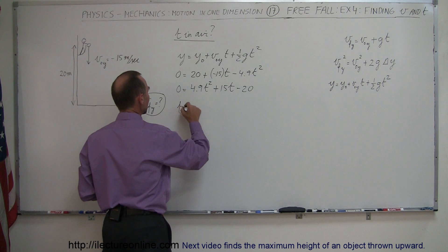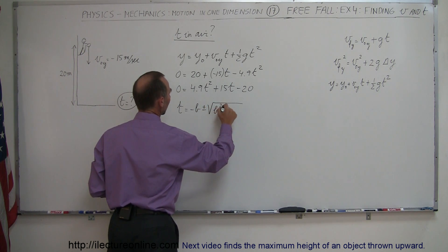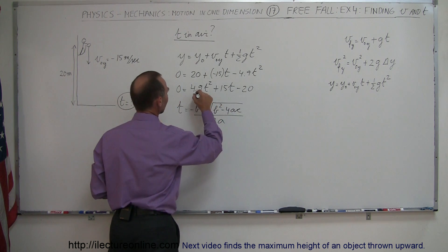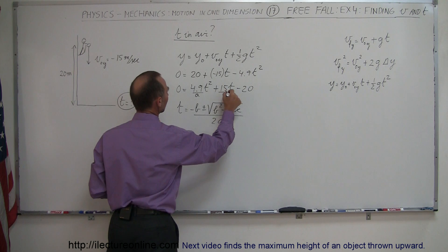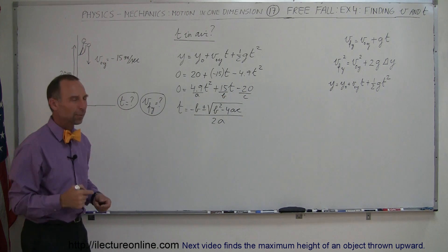You can say that t is equal to minus b plus or minus the square root of b squared minus 4ac, all divided by 2a, realizing that this coefficient is a, this coefficient is b, this coefficient is c. So let's plug in those numbers, see what we get.